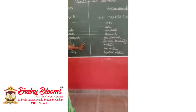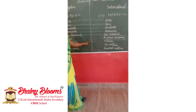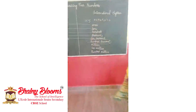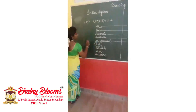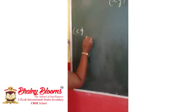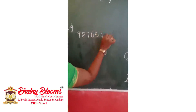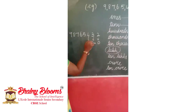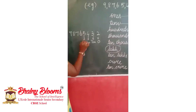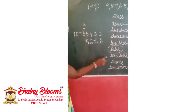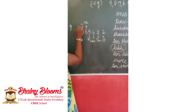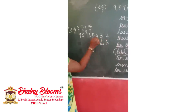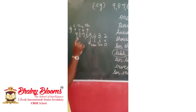Now let us see how to name a number in the Indian and international systems using the same example: 8, 7, 6, 5, 4, 3, 2. The place values from right are: ones, tens, hundreds, thousands, ten thousands, lakh, ten lakh, crore. In the Indian system, commas are placed after the last three digits, then after every two digits.